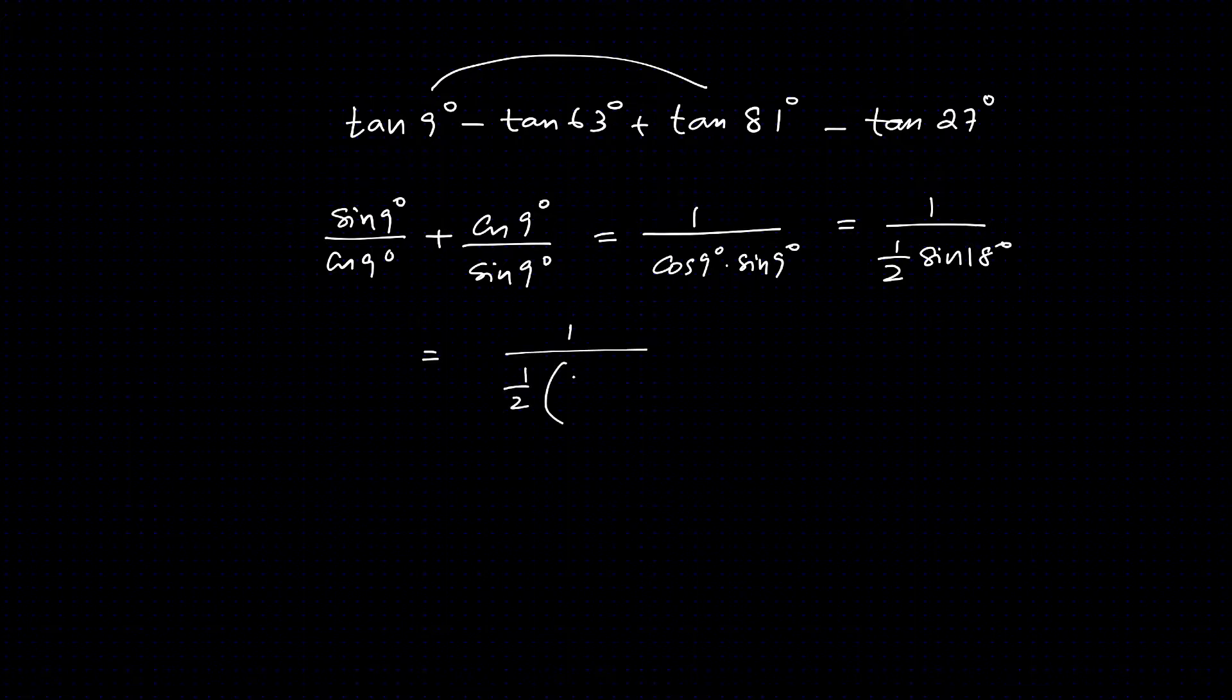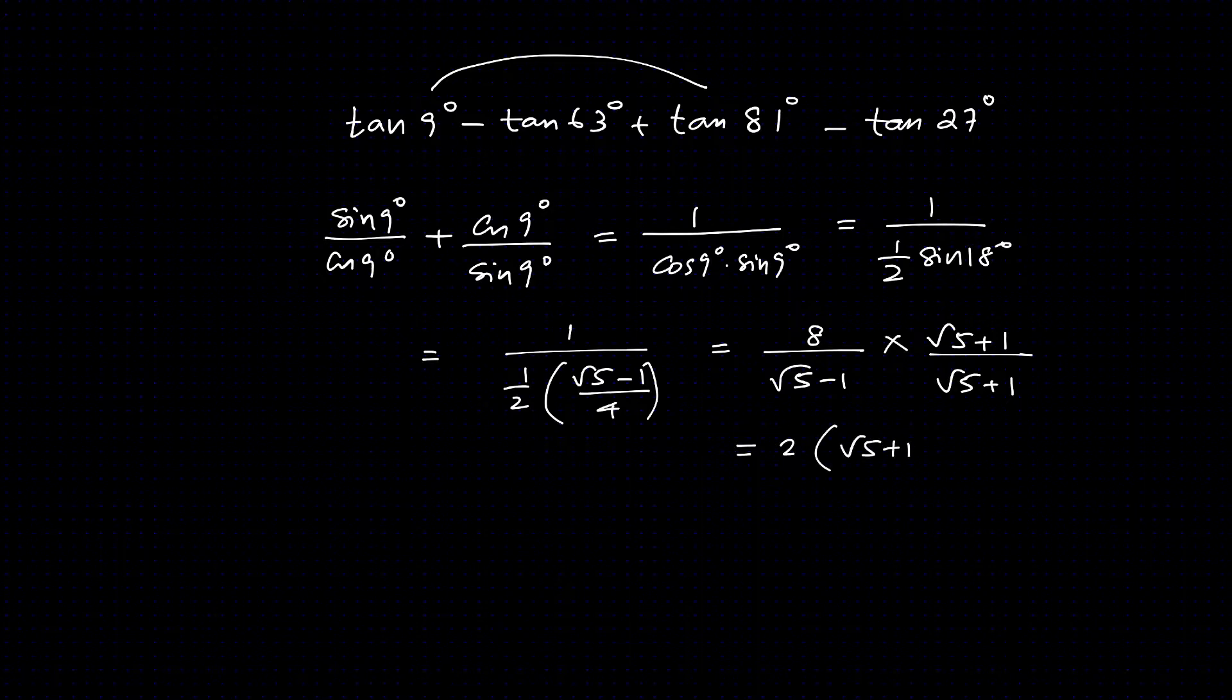What does sin 18 degrees mean? Root 5 minus 1 by 4. That's 8 divided by root 5 minus 1. Multiply the denominator to simplify. Multiply into root 5 plus 1 by root 5 plus 1. This gives 5 minus 1 is 4. This becomes 2 into root 5 plus 1.